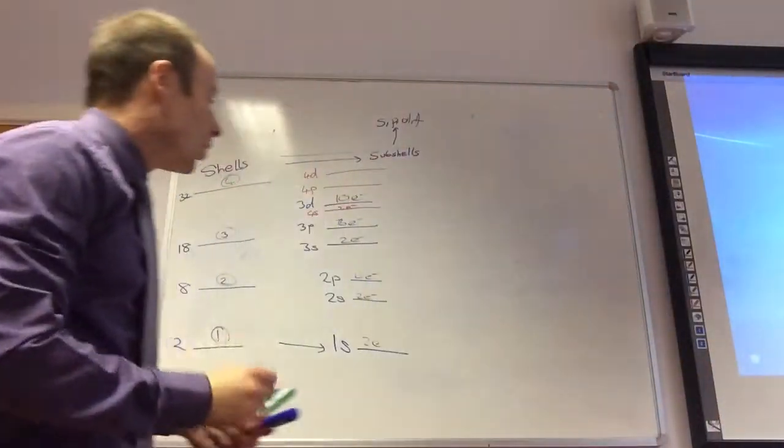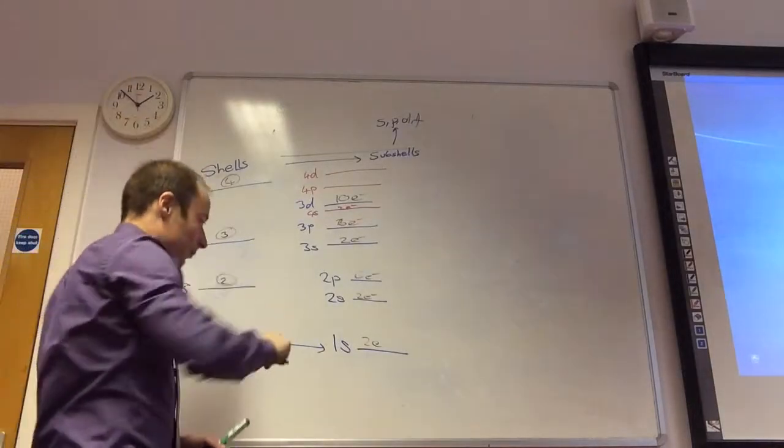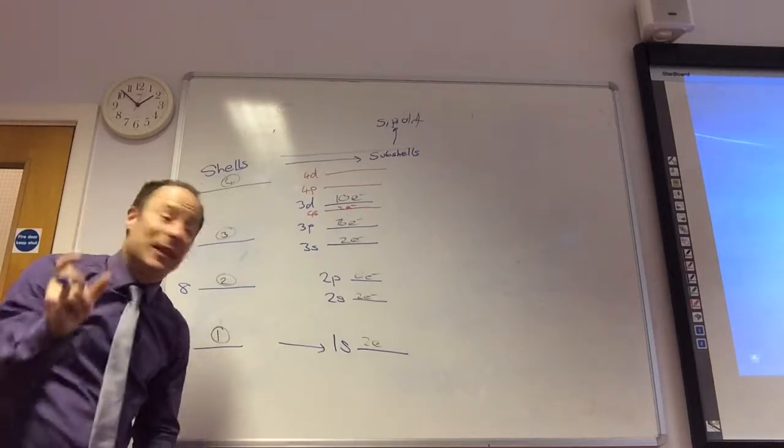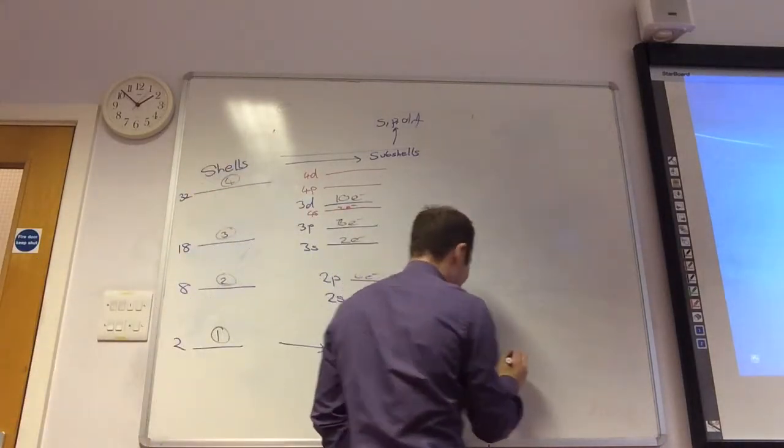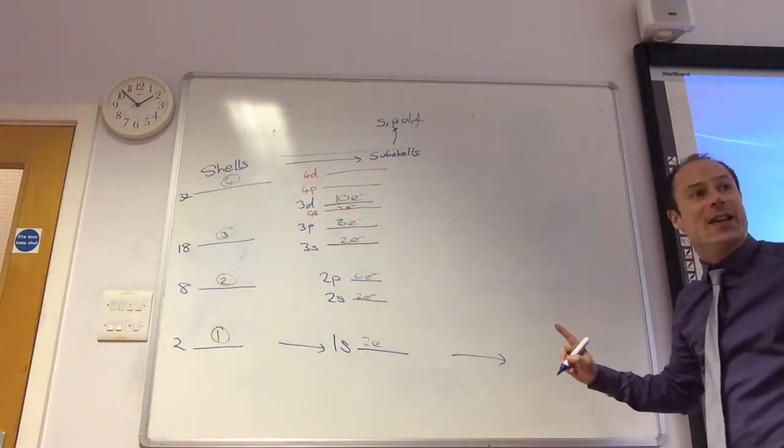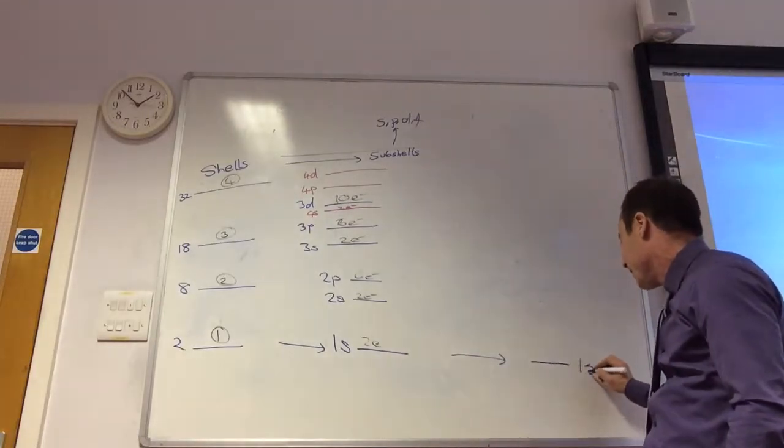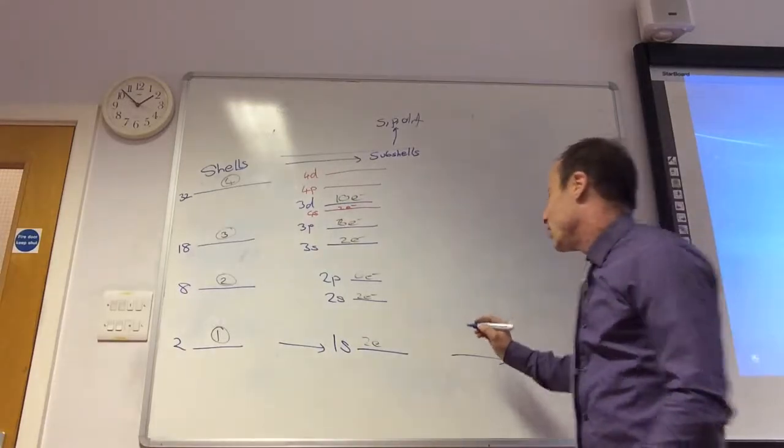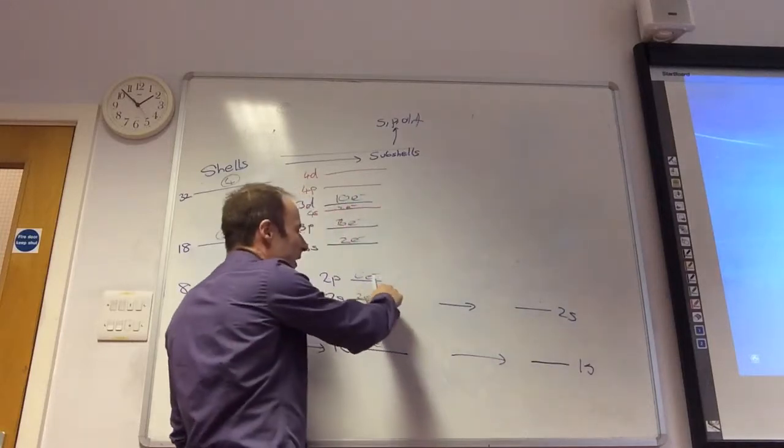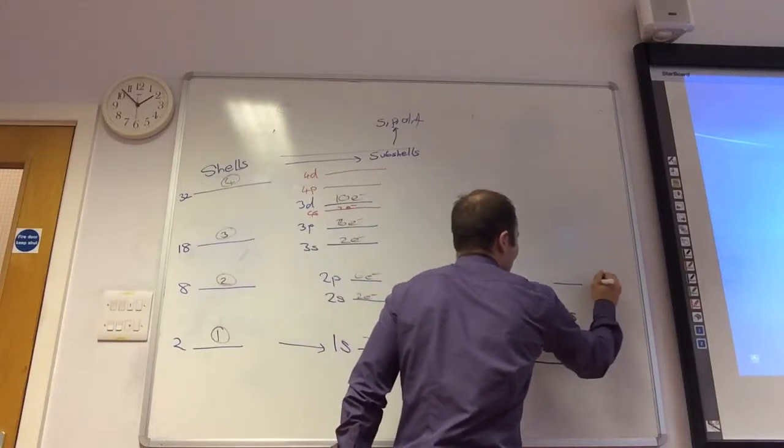So, those are sub-shells, but we break them down even more into orbitals. Orbitals can hold two electrons. They're the boxes. The 1S, how many orbitals must that be broken down into? One, because there's two. Each orbital can hold two electrons. This just has the 1S orbital. This one is going to become the 2S orbital. How many orbitals are going to make up this guy? Three. One, two, three.